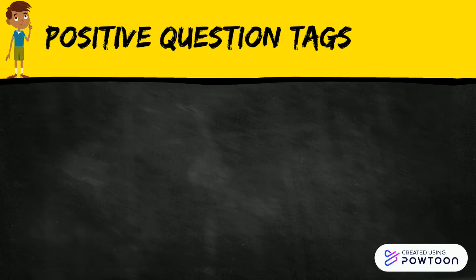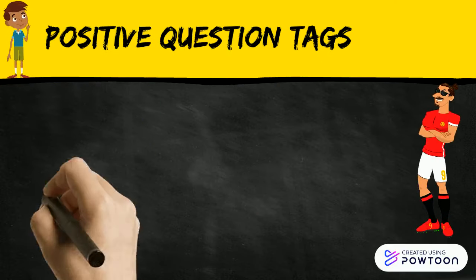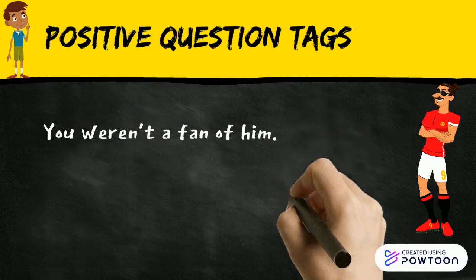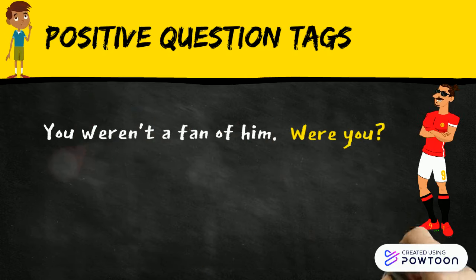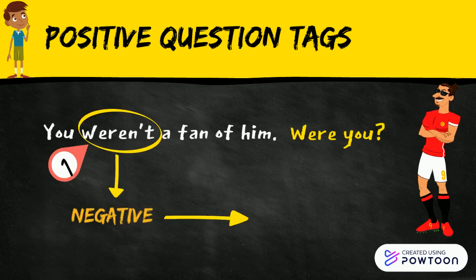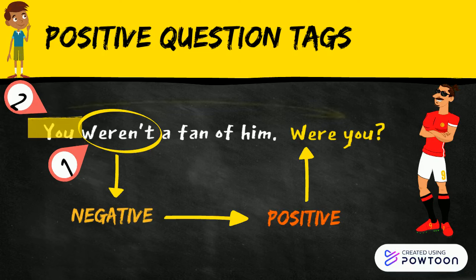Here is another example: 'You weren't a fan of him, were you?' Remember to change the auxiliary form from negative to the positive form, and then add the subject pronoun.